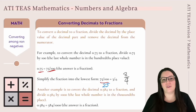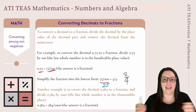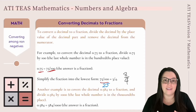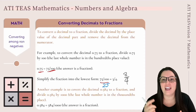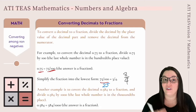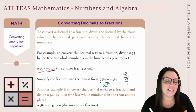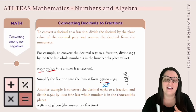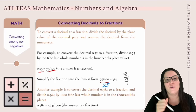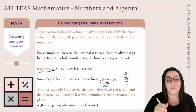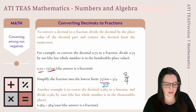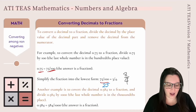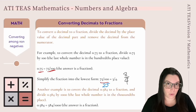Another example: converting 0.584 to a fraction. Since this number has three decimal digits, we can't divide by 100. The last number falls within the thousandths place, so our 0.584 becomes 584 over 1000.